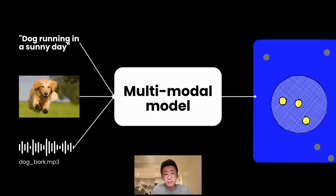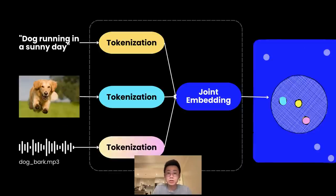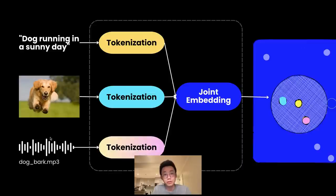multimodal models can take more than text inputs — like image, video, audio, or any type of data really. Behind the scenes, they take these different types of data and create joint embeddings, forming a shared representation space that captures information from text, image, video, and audio. Those shared representations enable the model to solve problems and run reasoning across different types of data.